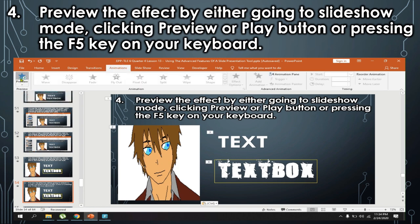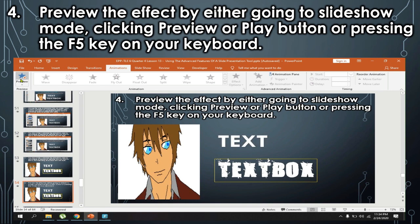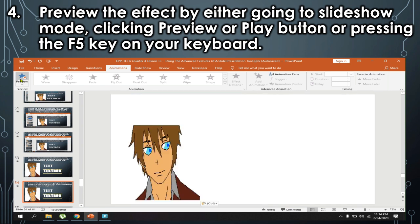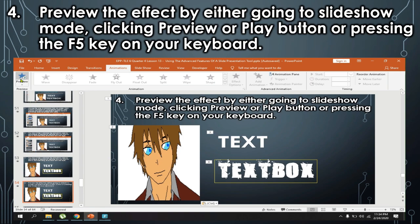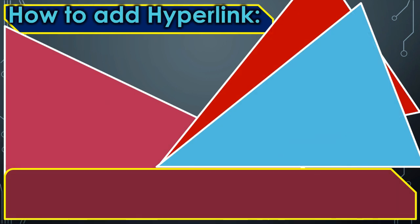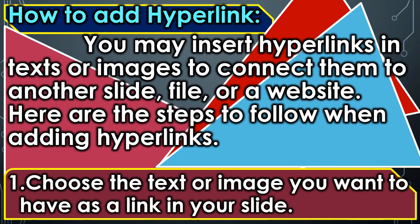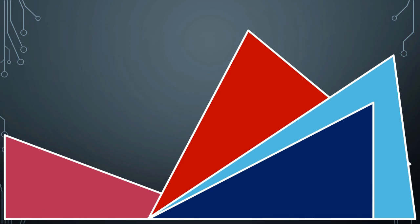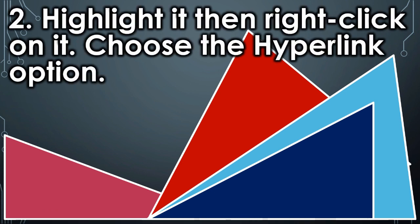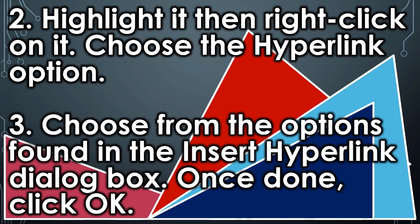How to add a hyperlink. You may insert hyperlinks in text or images to connect them to another slide, file, or a website. Here are the steps to follow. First, choose the text or image you want to have as a link in your slide. Second, highlight it then right-click on it and choose the Hyperlink option. Third, choose the options found in the Insert Hyperlink dialog box. Once done, click OK.